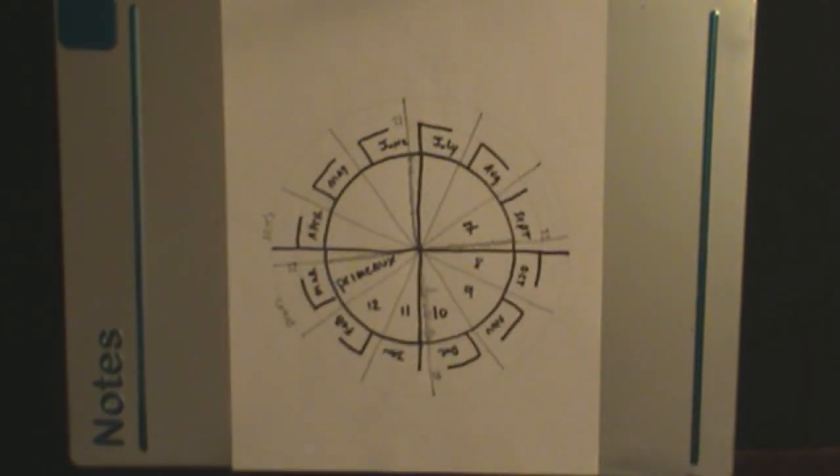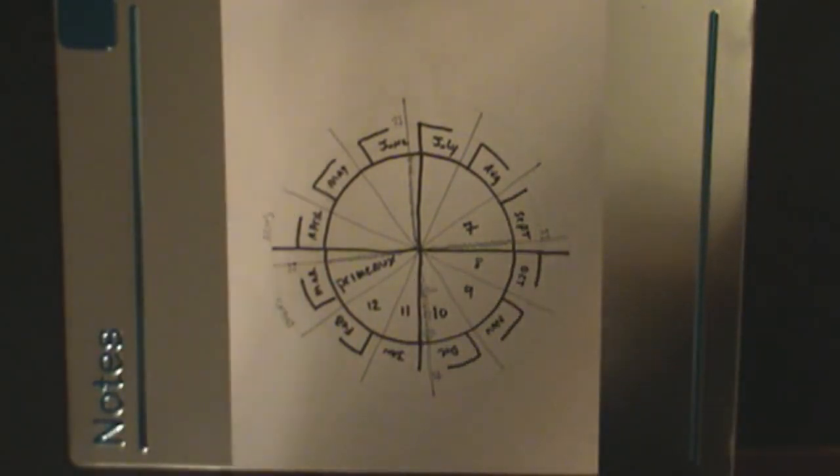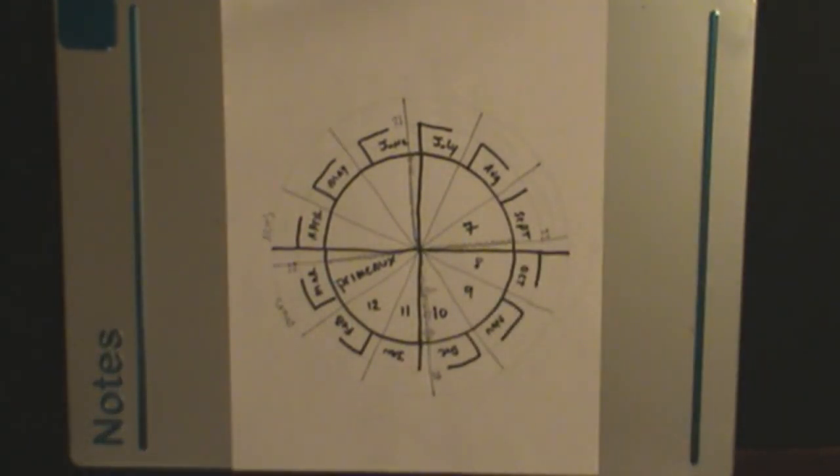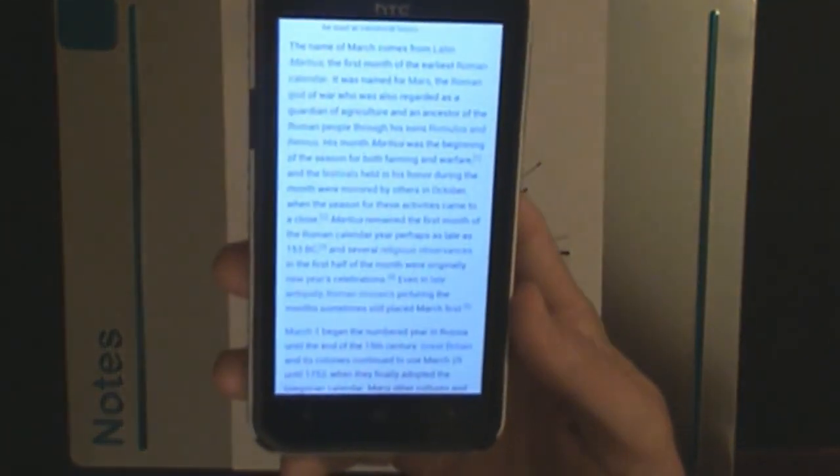So I'll read this real quick, just off the internet. I think this is Wikipedia. It talks about March as being the first month of the year.